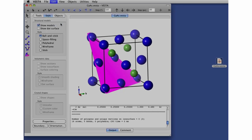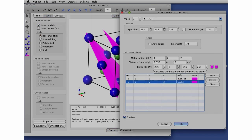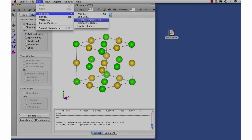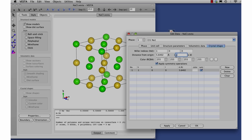We can add other planes, too. Earlier we talked about facets. Can we visualize those, too? Oh, behold the power of Vesta. We'll go under Edit, Edit Data, Crystal Shape. Let's start with something simple. A cubic crystal with 100 faces.